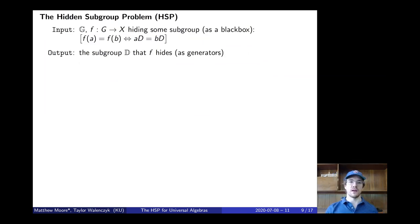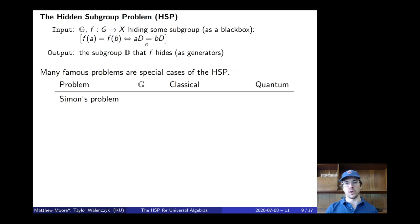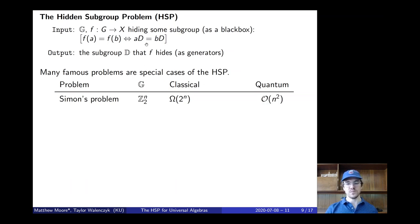Many famous problems are actually special cases of the HSP. The first is Simon's problem, significant mainly from a historical perspective — it was the second problem historically to exhibit superpolynomial speedup on a quantum computer. Simon's problem takes the group G of n-dimensional binary vectors under addition and is just the HSP for that group. Classically the best you can do is exponential — essentially brute force — while the quantum algorithm is quadratic and very simple.